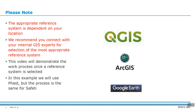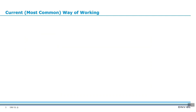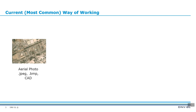This video will demonstrate the work process once a reference system is selected. In this example we will use FAST, but the process is the same for SAFETTI. In this table you can see a list of currently exportable objects for FAST and for SAFETTI.